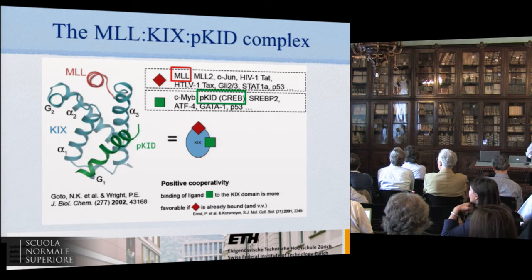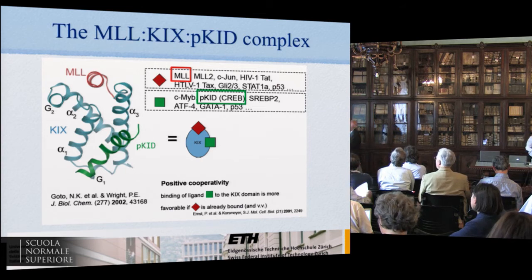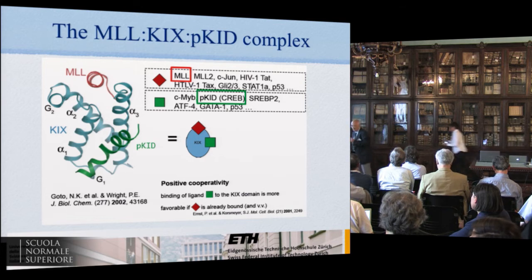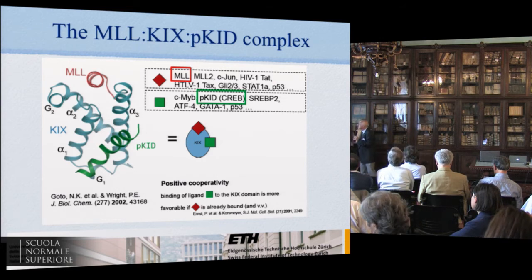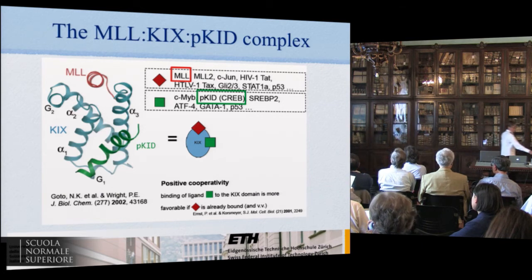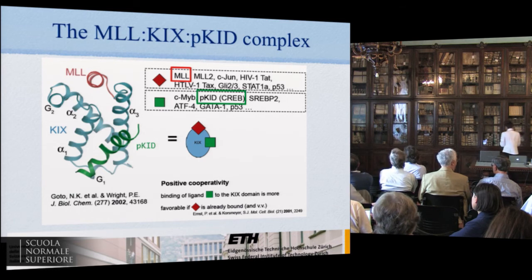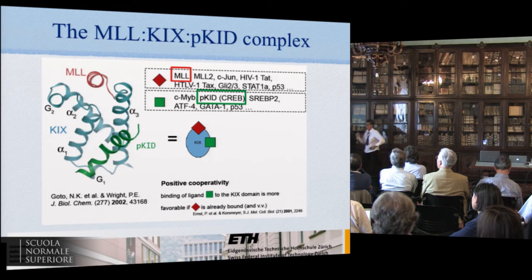So we have the Kix domain. This is the allosteric ligand MLL, and this is the substrate PKID. This has been studied by a group in Austria with whom we collaborate — Martin Tollinger is the main person. What has been shown is that in the presence of MLL, the affinity for PKID changes.